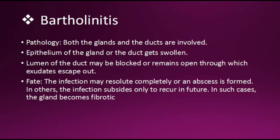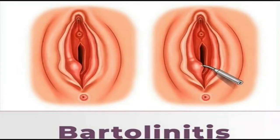Regarding the pathology, both the glands and the ducts are involved. The epithelium of the gland or the ducts gets swollen. The lumen of the duct may be blocked or remain open, through which exudate escapes out. The fate of the infection may resolve completely, or an abscess is formed. In others, the infection subsides only to recur in future, and in such cases the gland becomes fibrotic. Here you can see a picture of Bartholinitis — the glands become swollen and red.